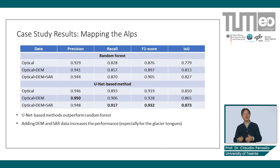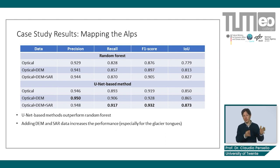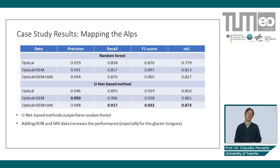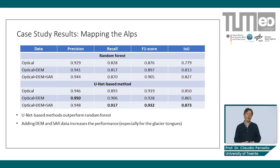We compared the unit-based network against standard pixel-based classifiers using random forests. We also compared results obtained using different sets of input features: only optical data, optical and DEM (digital elevation model), and finally optical plus DEM and SAR. The unit-based method significantly outperforms the pixel-based classifier, confirming the importance of learning spatial contextual features. Moreover, we observed that adding DEM and SAR data further improves the classification performance.